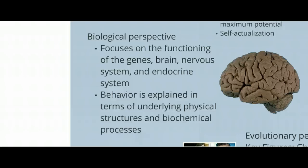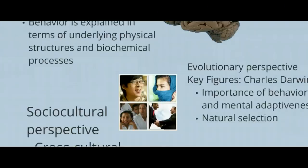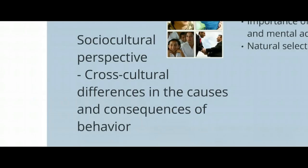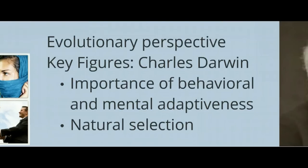The biological perspective looks at the structure of the brain and biochemical processes in the brain and body, and how that affects behavior. The sociocultural perspective looks at cross-cultural differences and the consequences in terms of behavior. And the evolutionary perspective — the key figure is Charles Darwin — is very important and actually comes before Sigmund Freud.